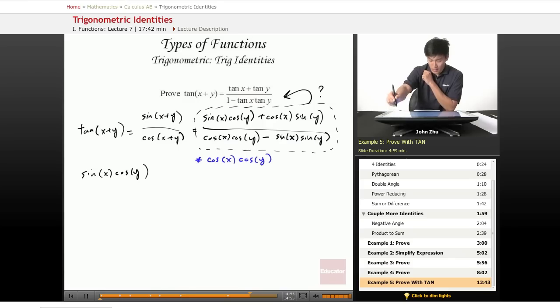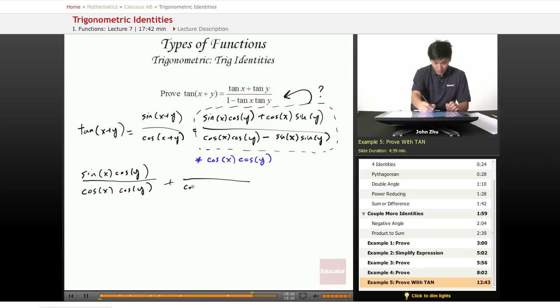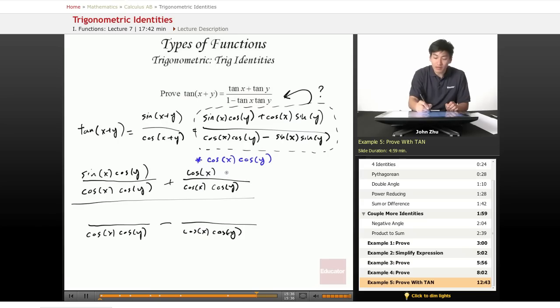So then let's go ahead and write that out. Sine of x cosine of y over cosine of x times cosine of y plus the next term over cosine of x times cosine of y all over the denominator terms over cosine of x times cosine of y. And we'll fill in these terms: cosine of x sine of y over cosine of x cosine of y minus sine of x times sine of y over cosine of x times cosine of y.